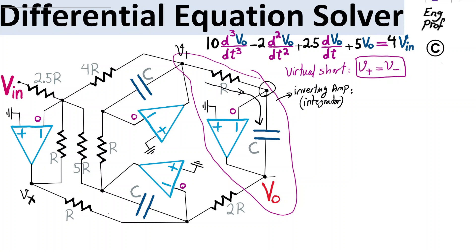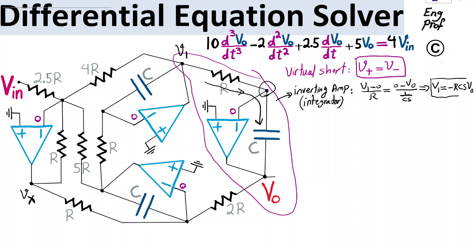The current through the resistor equals the current through the cap, so V1 minus 0 divided by R equals 0 minus Vout divided by the impedance of the cap (1/CS). Cleaning up, V1 equals negative RCS times Vout. This is effectively in the S domain: V1 represents the derivative of Vout. In time domain, V1 equals negative RC times dVout/dt — so the first derivative of Vout appears at this node. We will set RC equal to 1 as a designer choice.